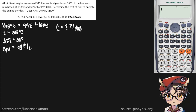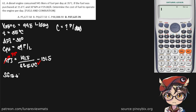Our first clue is the API. The API formula gives us a way to find specific gravity. We are given an API of 30°, so using the API formula, we can find our SG at 15.6°C. Plugging that into our calculator, we get an SG of 0.8762.